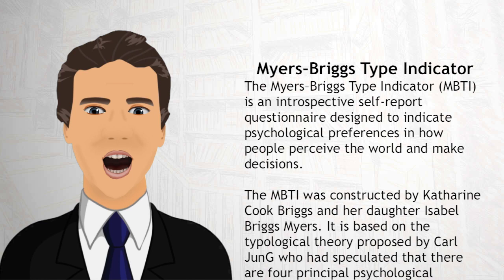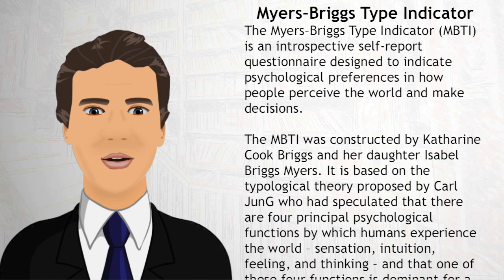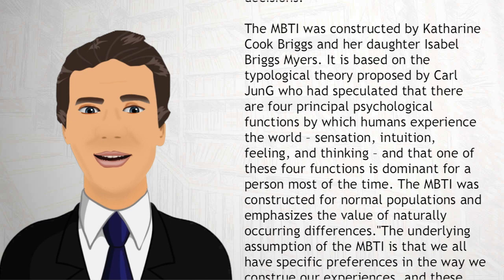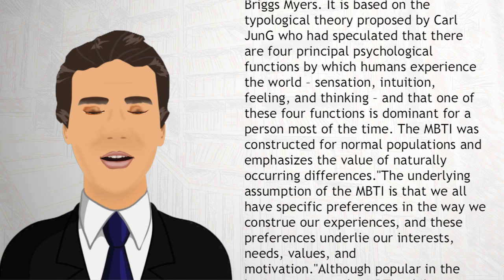It is based on the typological theory proposed by Carl Jung, who had speculated that there are four principal psychological functions by which humans experience the world: sensation, intuition, feeling, and thinking, and that one of these four functions is dominant for a person most of the time.